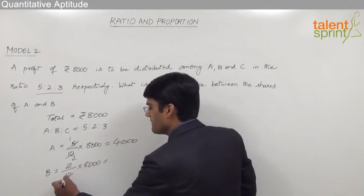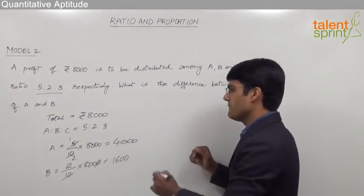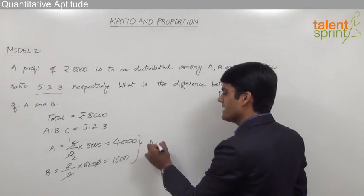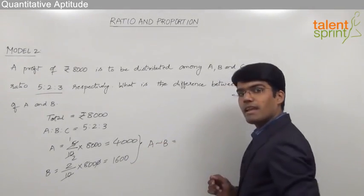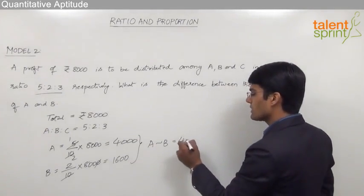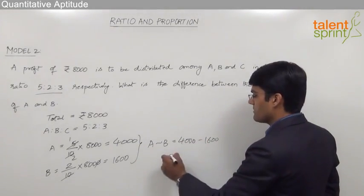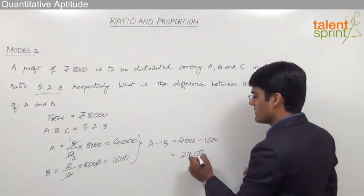From these two we can say that the difference of their shares A and B should be equal to 4000 minus 1600 which comes out to be 2400 rupees.